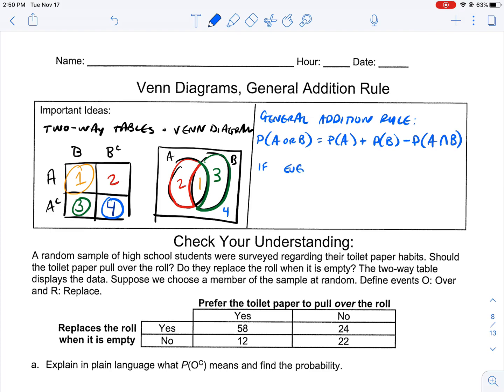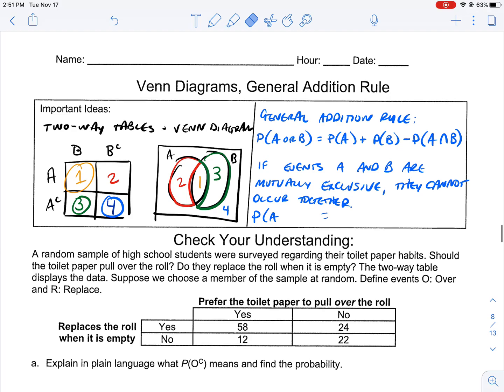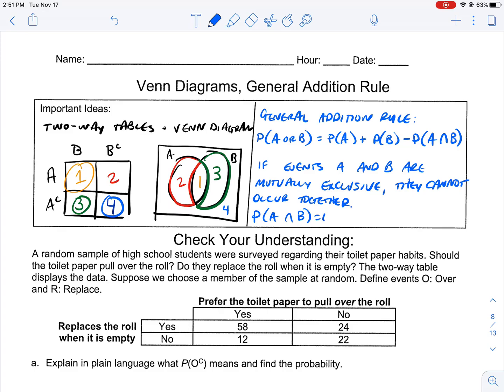When we write out the actual definition of the general addition rule, if events A and B are mutually exclusive, meaning they don't occur together, for example, what's the probability of a vehicle being a motorcycle and a car? Those are mutually exclusive. It can't be a motorcycle and a car.